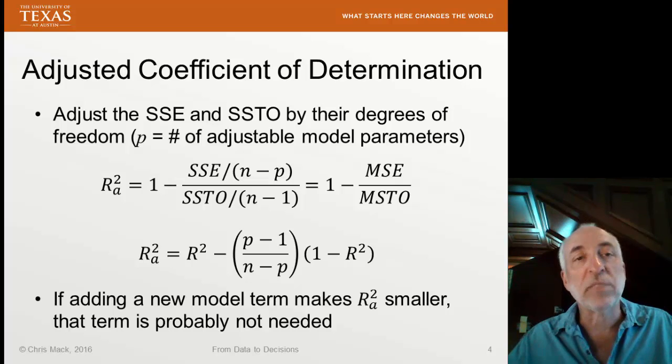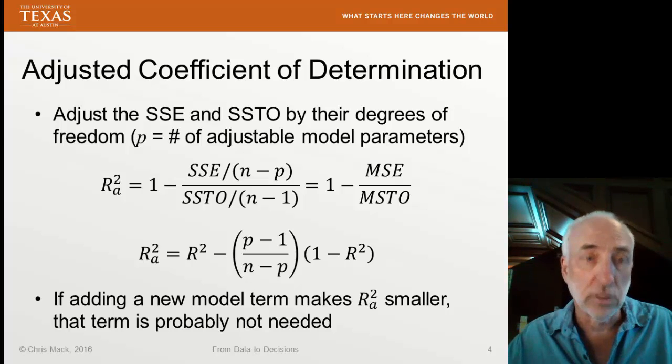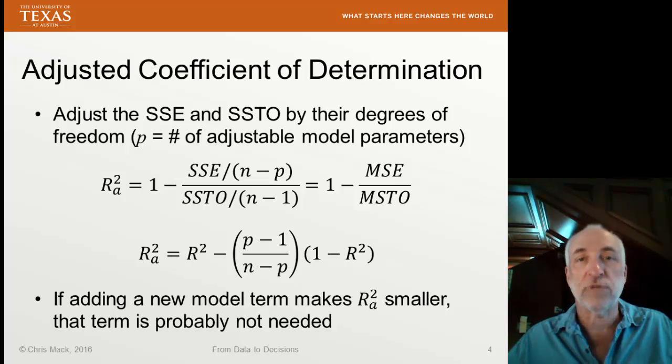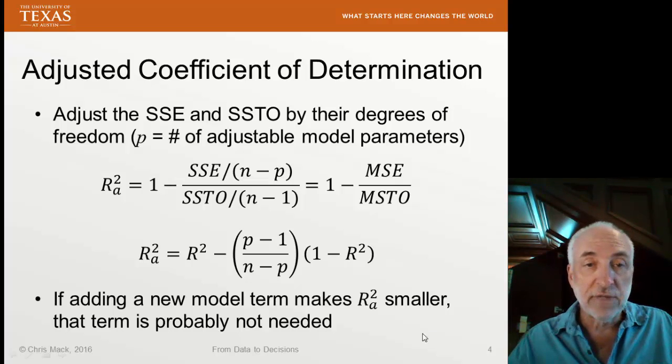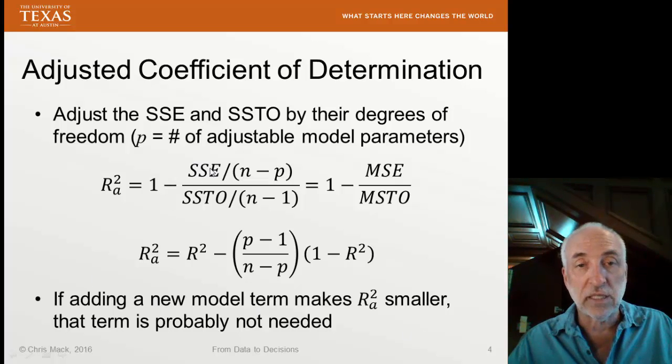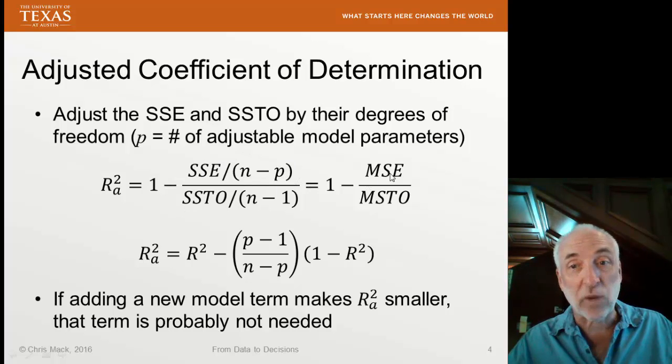One way to fix this problem is to adjust the coefficient of determination. We call it the adjusted R-squared or the adjusted coefficient of determination. And we do that by adjusting the sum of squares errors and the sum of square total by their degrees of freedom. So if I have p model parameters, parameters that I allow to adjust to get the best fit, and instead of saying R-squared as 1 minus the sum of squares of the errors divided by the total sum of squares, I'll instead say it's equal to the mean square errors divided by the mean square total. In other words, variances are my estimates of the variances taking the sum of square errors divided by the number of degrees of freedom.